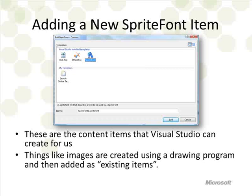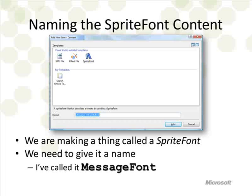You just pick Sprite Font and then give it a name. If you already have pictures you want to put into your game, you can add those as existing items as long as they're in a sensible graphics format. We're making a brand new font — you can call it what you like. By default it's called SpriteFont1, but I'm going to call it MessageFont because it's a font that's going to be used to display messages. That's the name I'll use in the program whenever I want a font to display messages.